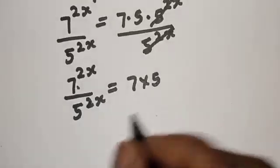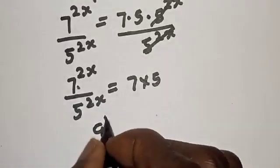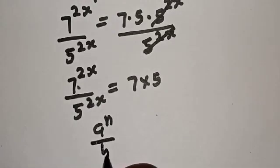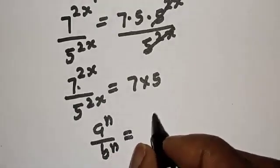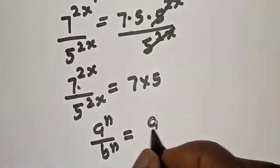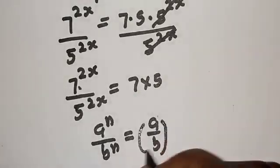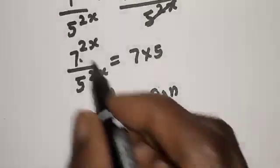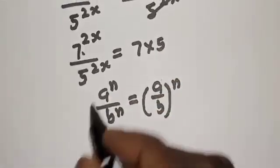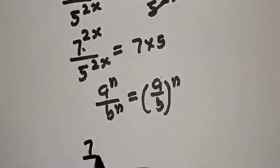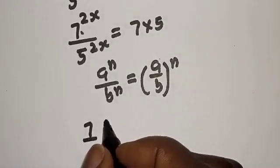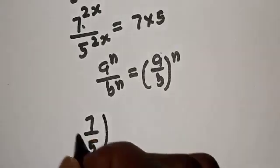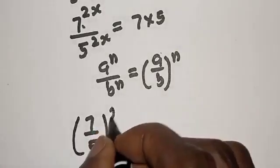Take note of this rule: if you have a raised to power n over b raised to power n, this is equal to a over b, all raised to the power of n. Then this becomes 7 over 5, all raised to the power of 2s, equal to 7 times 5.